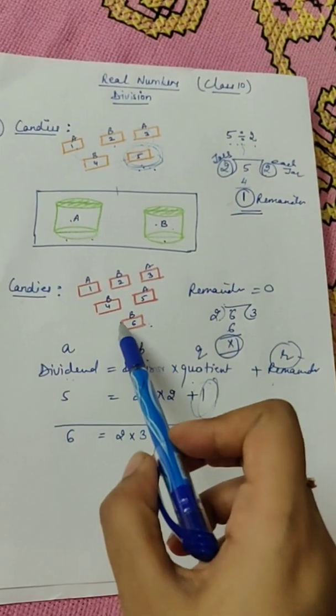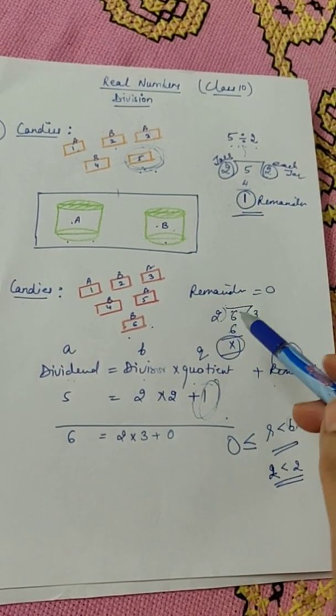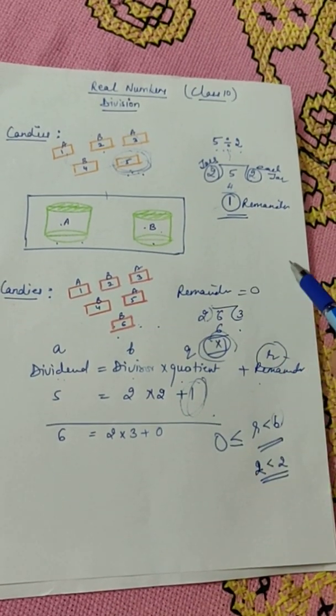Similarly if I take six candies, six candies can be equally divided between two boxes and each box will contain three candies. And your remainder will come out to be zero. That means no candy is left out.